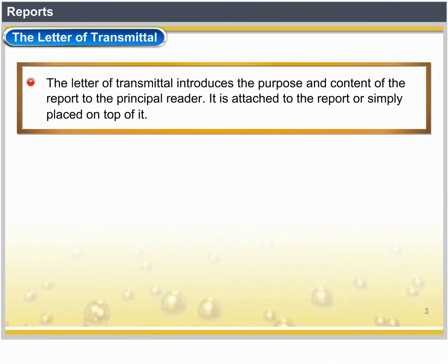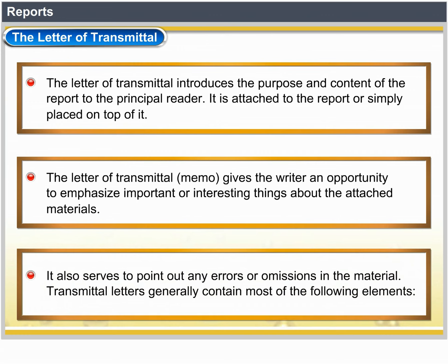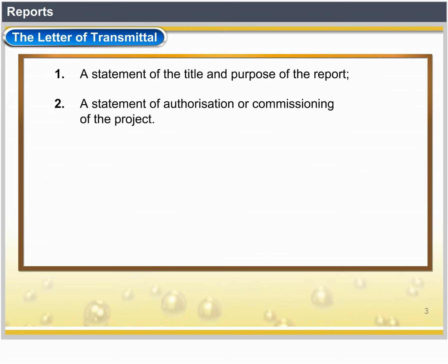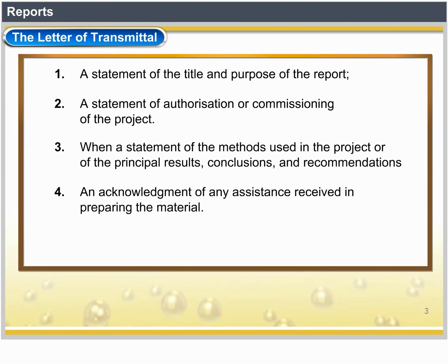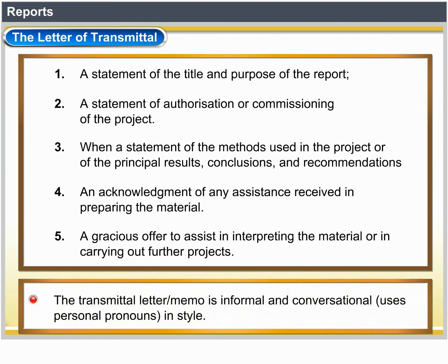The Letter of Transmittal introduces the purpose and content of the report to the principal reader. It is attached to the report or simply placed on top of it. It gives the writer an opportunity to emphasize important or interesting things about the attached material and also serves to point out any errors or omissions. Transmittal letters generally contain: 1. A statement of the title and purpose of the report. 2. A statement of who authorized the project and when. 3. A statement of the methods used or principal results, conclusions and recommendations. 4. An acknowledgement of any assistance received. 5. A gracious offer to assist in interpreting the material. The Transmittal Letter is informal and conversational, using personal pronouns.